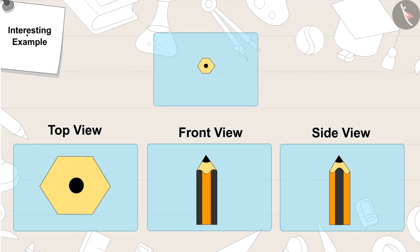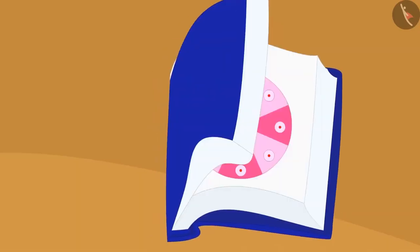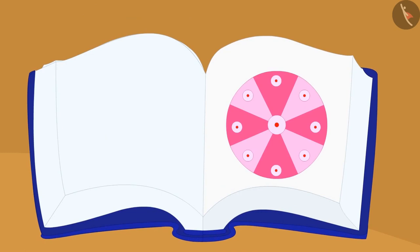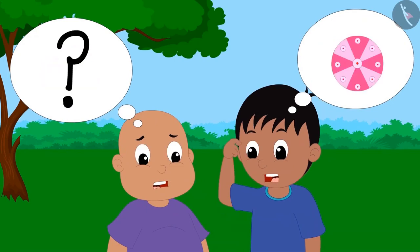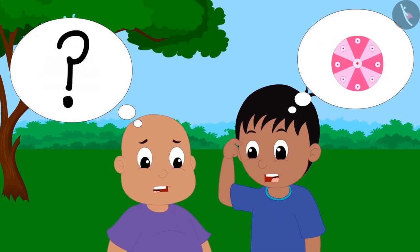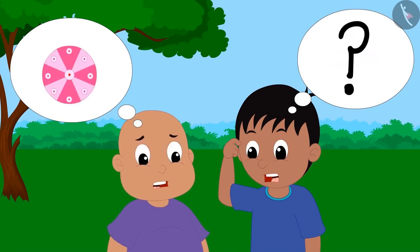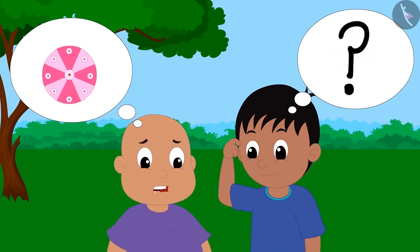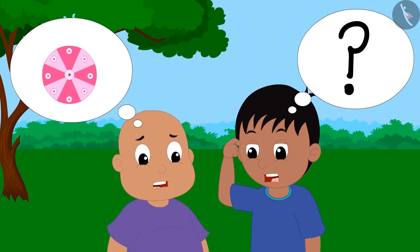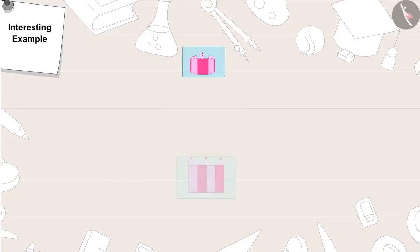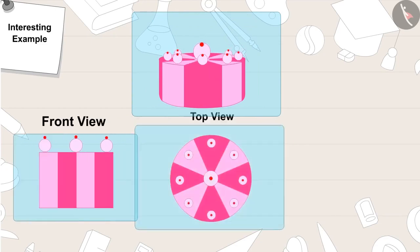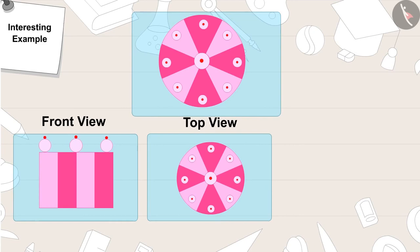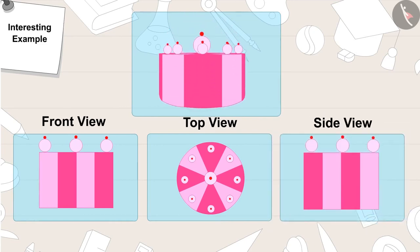Gaggoo then told Raju and Bablu: this is the next picture. Gaggoo turned the page and said, can you help Raju and Bablu identify the object? Think, think. Raju and Bablu still couldn't identify the object. This is a cake. A cake looks like this in front view. From above — in top view — it looks like this. And in side view, it looks like this.